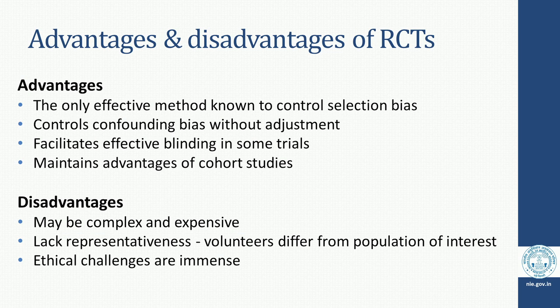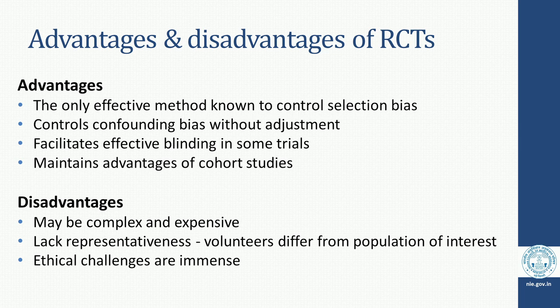Even with impediments, clinical trials are the only way to make progress in medical science. Without clinical trials, no new drugs will come, no new technologies will be tested, and no new vaccines will be tested, so they must be supported and adequate information about them must be disseminated. Advantages include that this is the only effective method known to control selection bias of participants, it controls confounding bias without adjustment, facilitates effective blinding, and maintains advantages of a prospective cohort study.